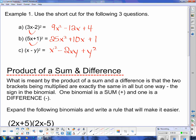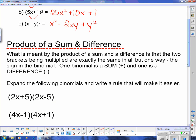Now the product of a sum and a difference, it's even easier than that. What is meant by the product of the sum and the difference is that the two brackets being multiplied are exactly the same, but with one small change, one binomial has a sum and one has a difference. So expand the following.